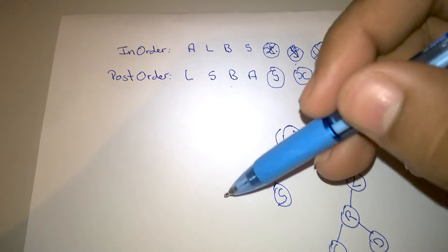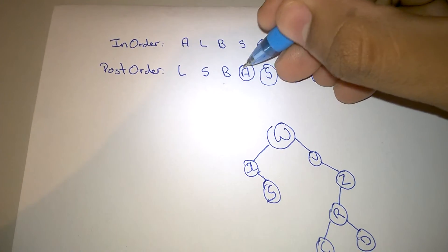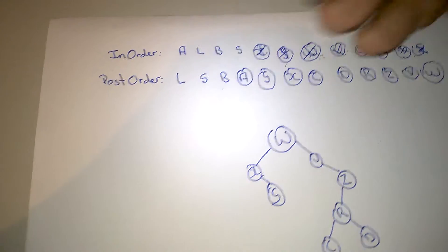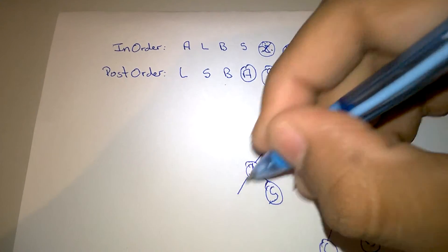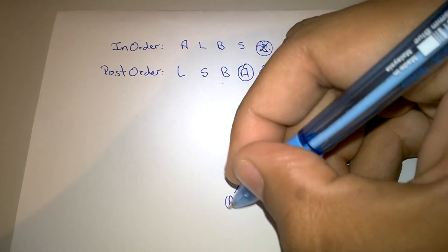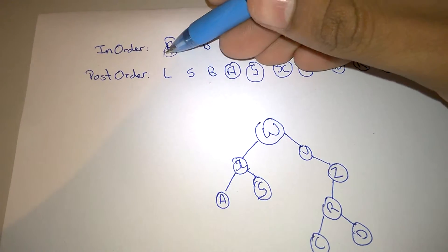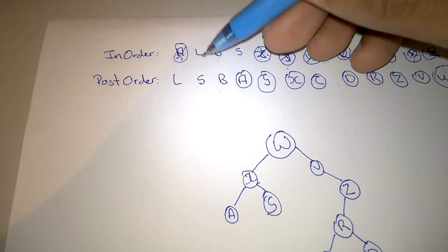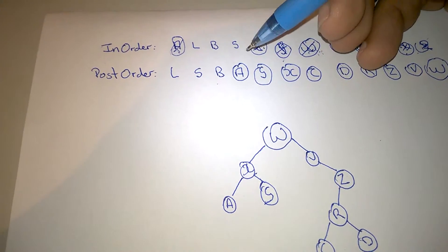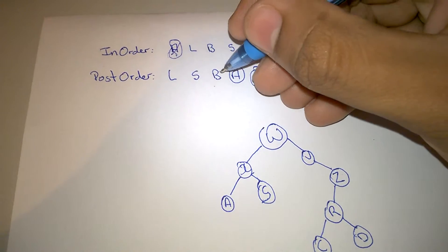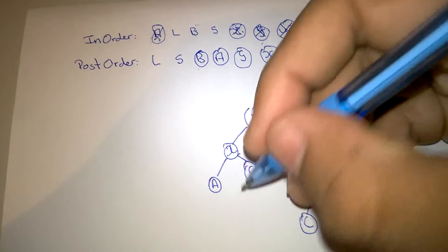So we look for the next value in the post-order, which is A, and we see A here. So A is to the left of X. We put A here and remove A from here. We'll see that A has three values to the right. So everything we're going to put after A now will go to the right. So we take B, we see B here, B is to the right of A, so we put B here.